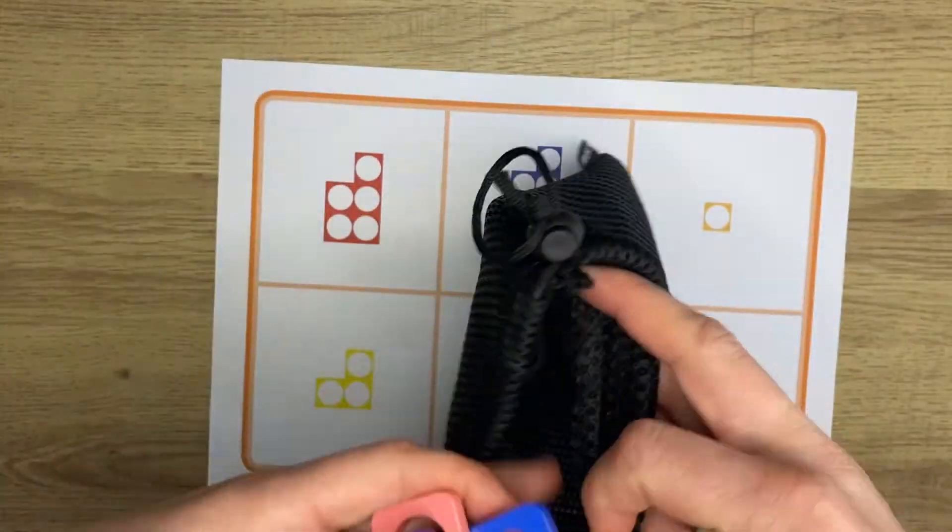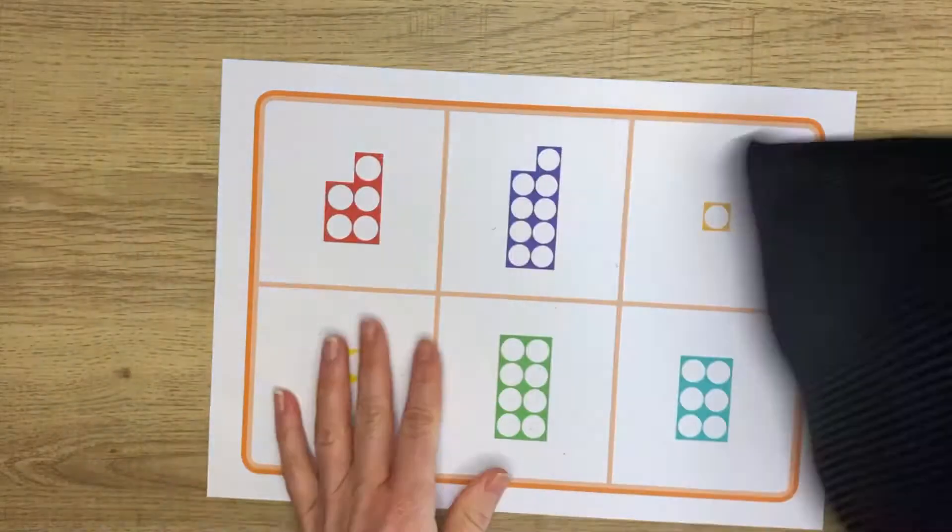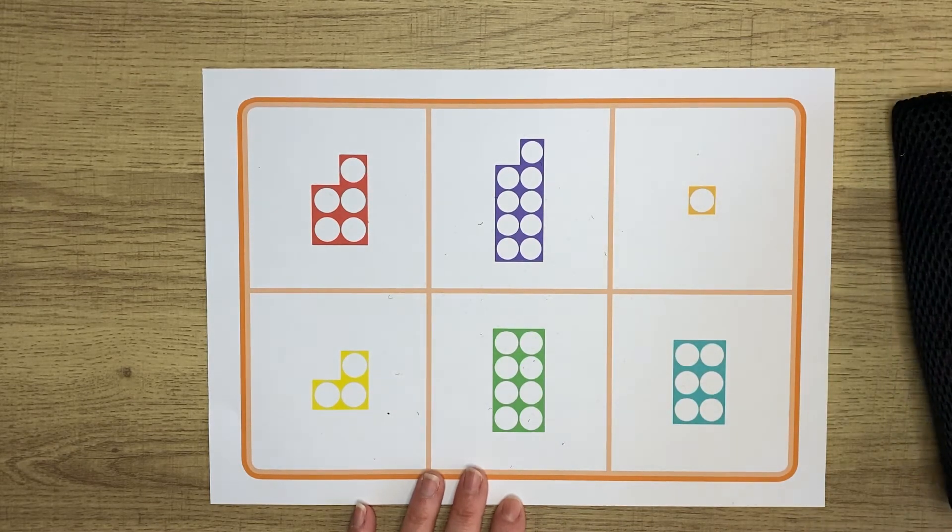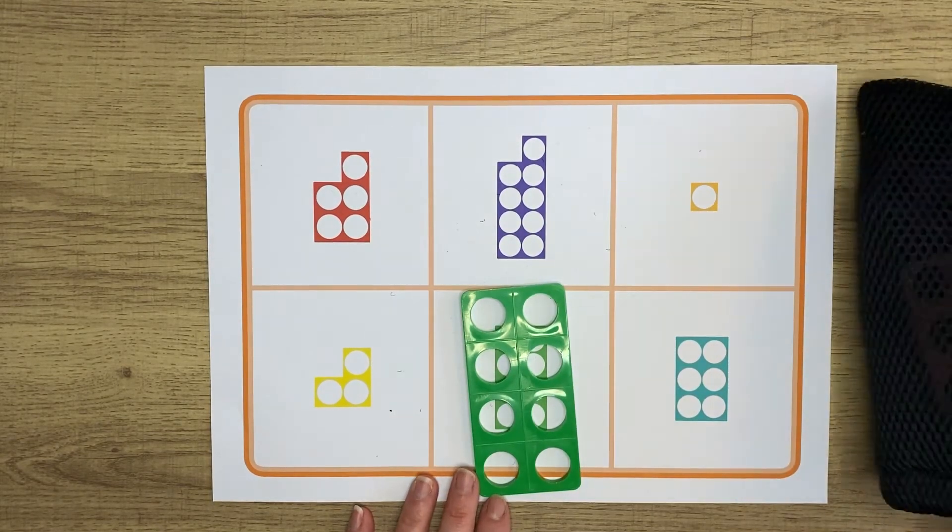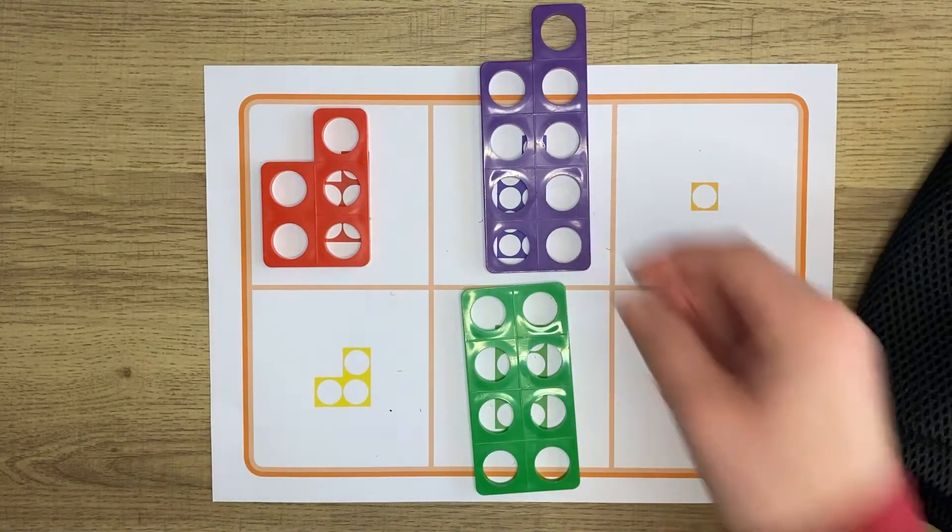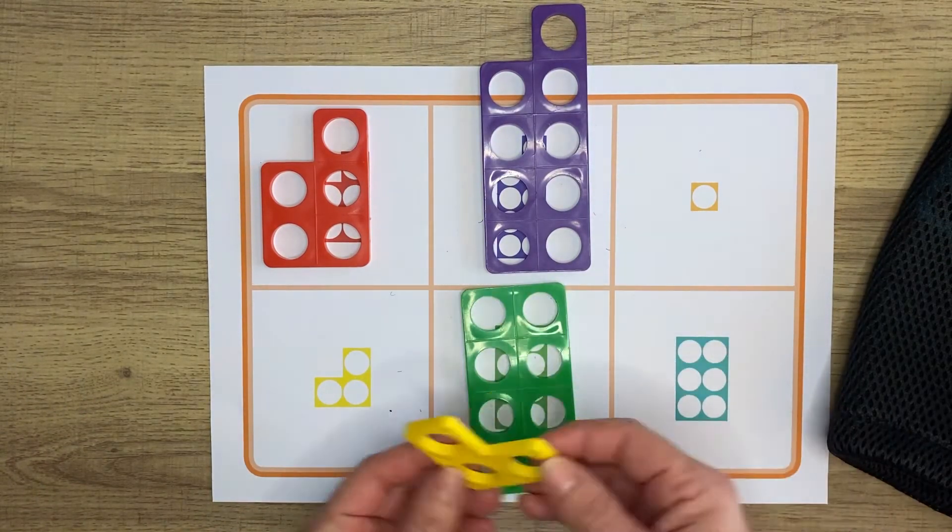Number shapes are fantastic to help with number recognition. Here I've used actual number shapes rather than the cutouts to save on printing. Why not pop the number shapes in a feely bag, then your child can pick one out and see if they can match it to one on their bingo board.